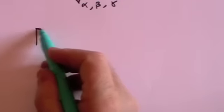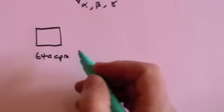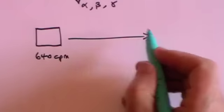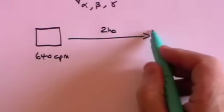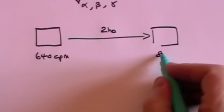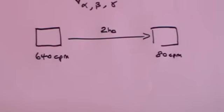So let's do an exam question. Let's take a substance which is emitting 640 counts per minute. That is to say we are measuring either alpha or beta or gamma radiation and we're getting 640 counts per minute. And then after two hours we are now measuring only 80 counts per minute. And the question will be what is the half-life?